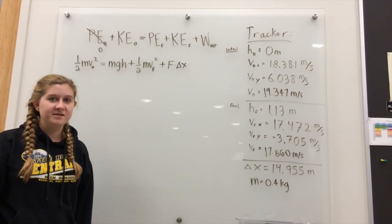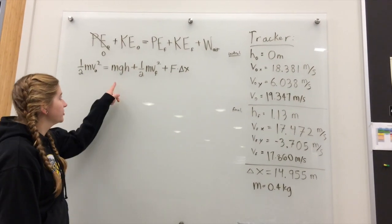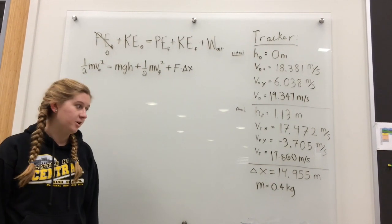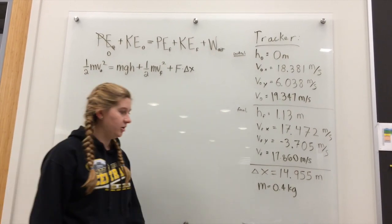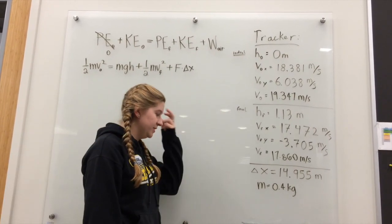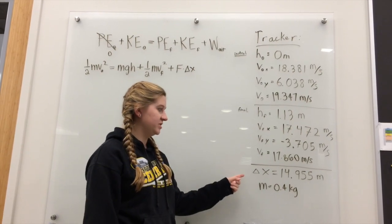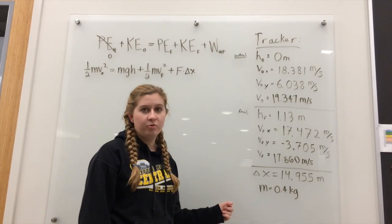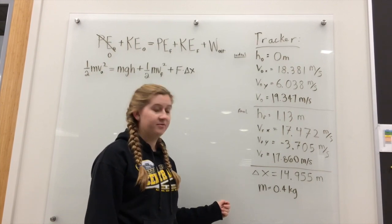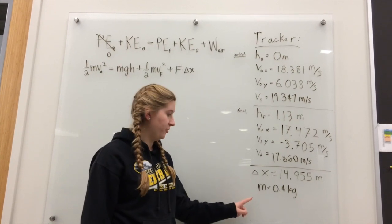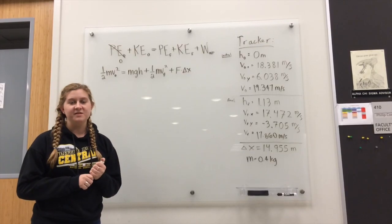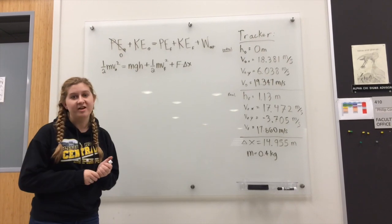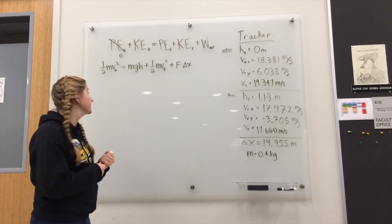The reason the soccer ball has a final potential energy is because it never hits the ground in the video. Using Tracker, we found the position of the soccer ball to be 14.955 meters, and we found the mass of the soccer ball to be 0.4 kilograms. Using these values, we plug them into our conservation of energy equation to find the force.